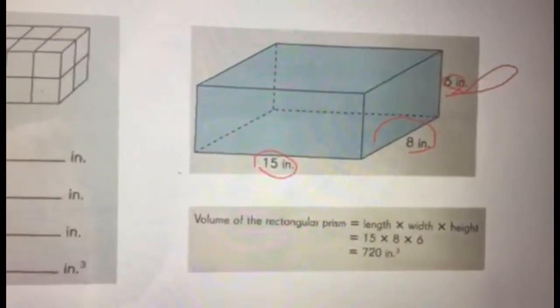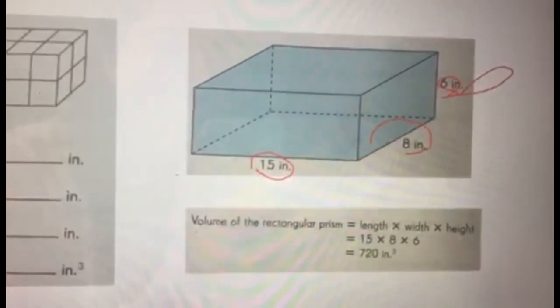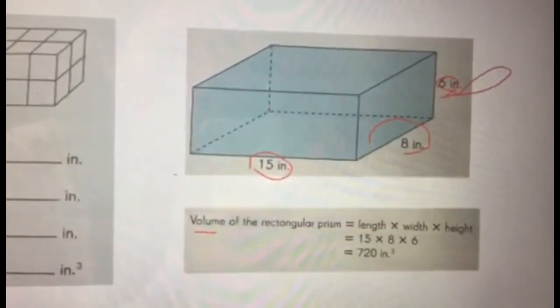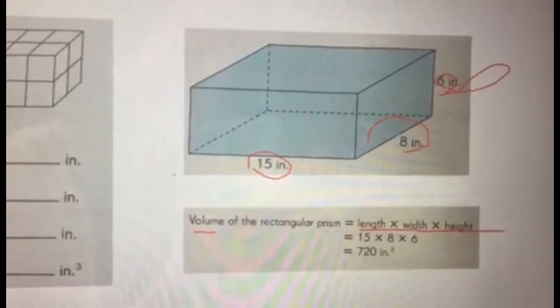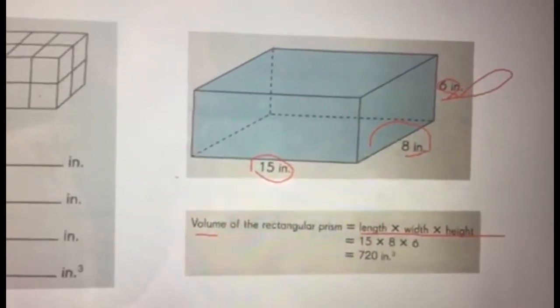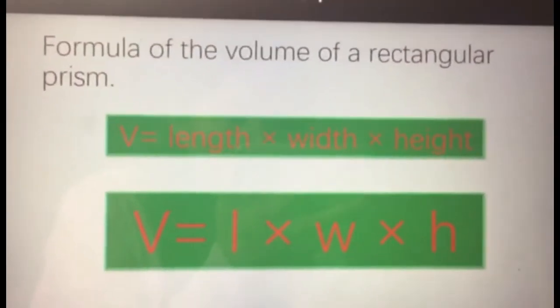Based on what we have been doing, we have been learning the volume would be length times width times height. This is the formula of the volume of a rectangular prism. I put it in big letters like this.